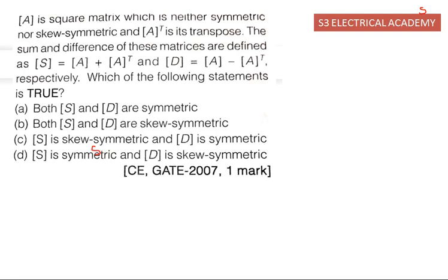This is a GATE 2007 Civil Engineering paper problem. A is a square matrix which is neither symmetric nor skew-symmetric, and A-transpose is its transpose. The sum S is equal to A plus A-transpose, and the difference D is equal to A minus A-transpose. The question asks which of the following statements are true: both S and D are symmetric; S and D are skew-symmetric; S is skew-symmetric; or D is symmetric.